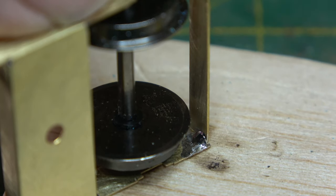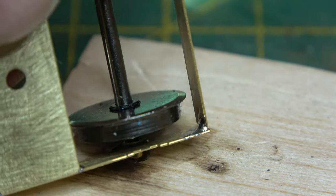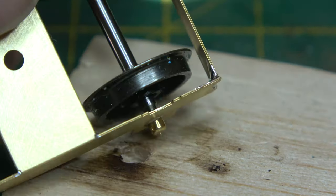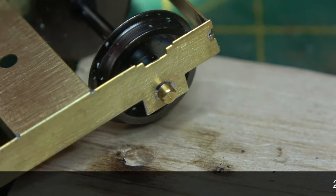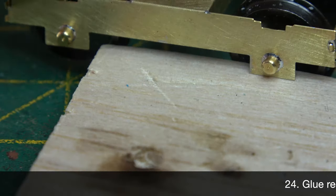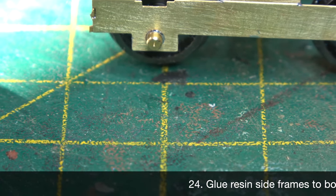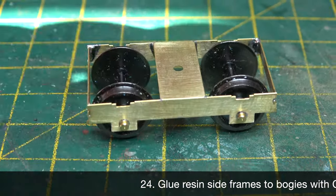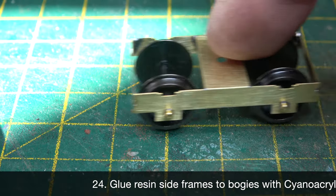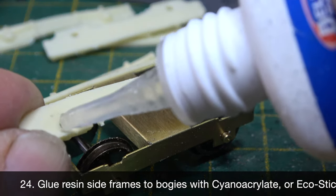There will be a word that pops up on the screen in a second that describes the type of glue that we stick the cosmetic side frames on with. I can't even say it, but it equates to super glue. I use Deluxe Materials Rocket Odorless.